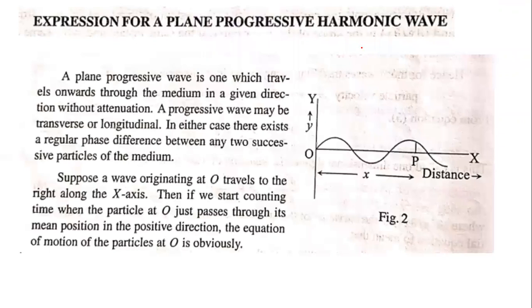We will start with the expression for a plane progressive wave. A plane is having two dimensions. A plane progressive harmonic wave is one which travels onwards through the medium in a given direction without attenuation.